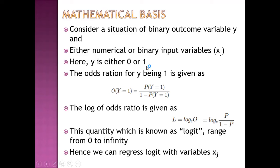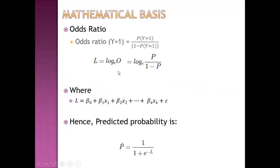y is either 0 or 1. The odds ratio for y equals 1 is given by probability of y equals 1, divided by 1 minus probability of y equals 1. The logarithm of the odds ratio is known as the logit. The range of logit is from 0 to infinity. Hence, we can regress the logit with independent variables x_j. This is our logistic regression model, and the predicted probability is given by this equation.